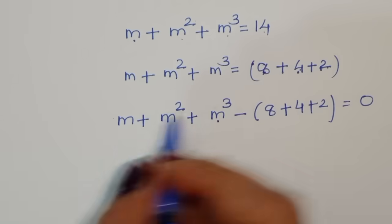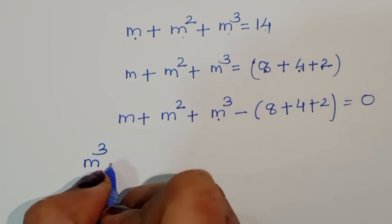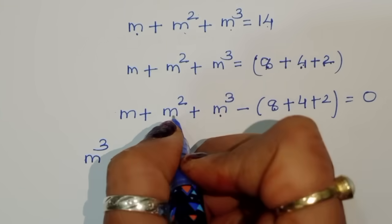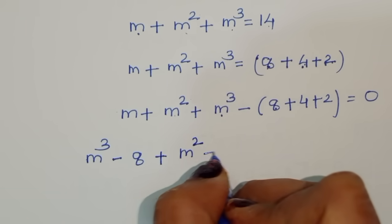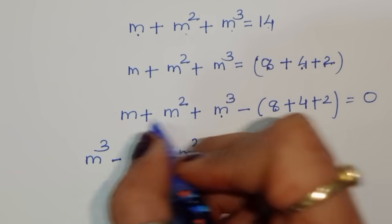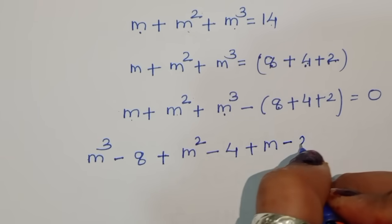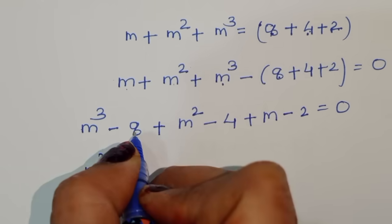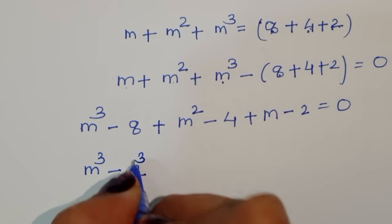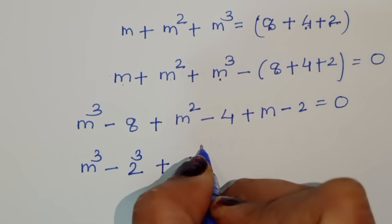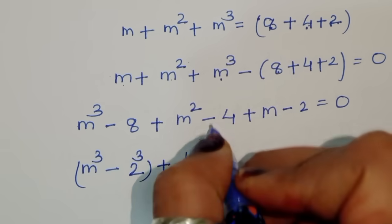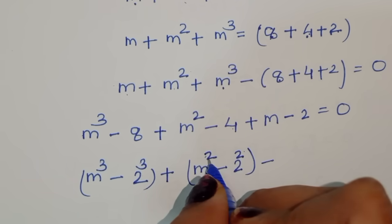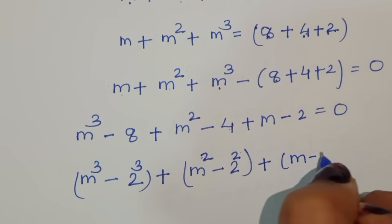We group the terms: (m³ − 8) + (m² − 4) + (m − 2) = 0. We can write 8 as 2³ and 4 as 2², so we have (m³ − 2³) + (m² − 2²) + (m − 2) = 0.